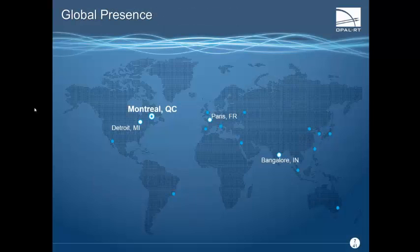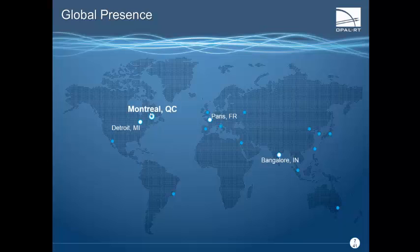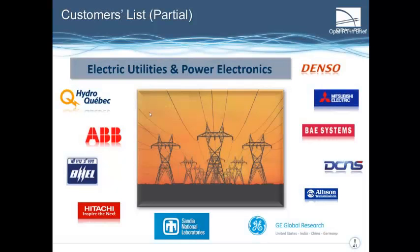Here is the map of our global presence. Our offices and distributors are spread out through the entire world. We have our headquarters in Montreal, Quebec. We also have offices in Paris, Detroit, and Bangalore in India. There are many distributors elsewhere around the world. Among them, you can see a few of the electric utilities and power electronics companies we deal with. We have a strong partnership with Hydro-Quebec, and many other big companies rely on our simulators, such as ABB, Mitsubishi Electric, GE, and so on.